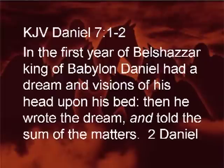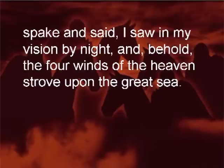Let's go through chapter 7 verse by verse. Verses 1 and 2: 'In the first year of Belshazzar, king of Babylon, Daniel had a dream and visions in his head upon his bed. He wrote the dream and told the sum of the matters. Daniel spoke and said, I saw in my vision by night, and behold, the four winds of heaven strove upon the great sea.'